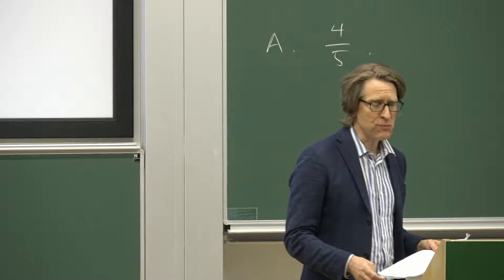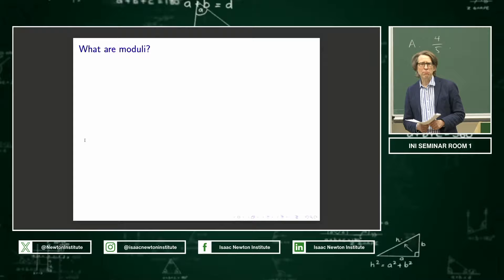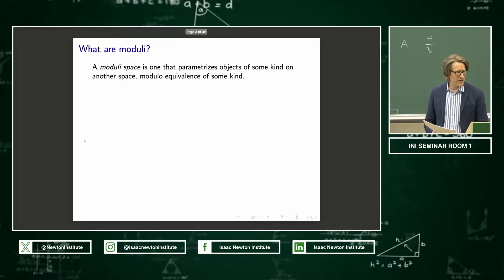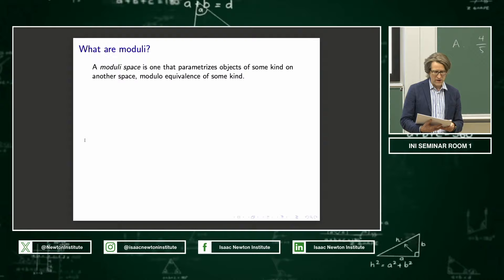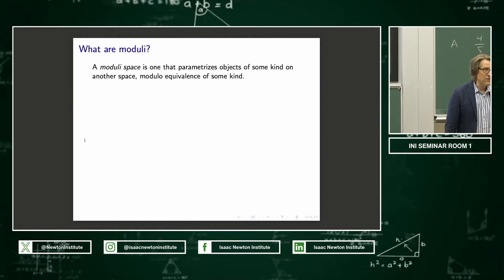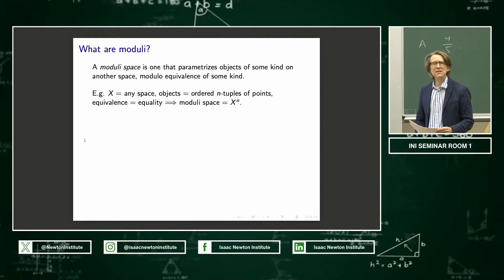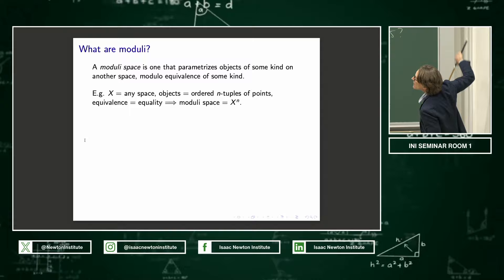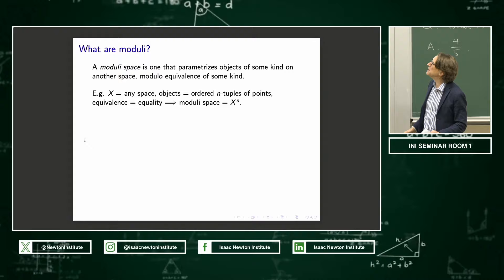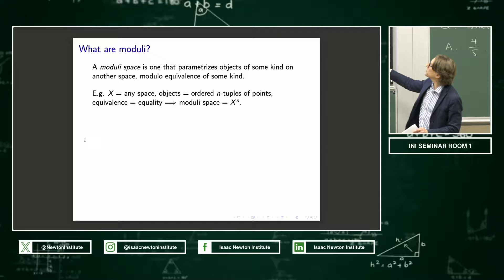I see a lot of algebraic geometry as centering around the problem of moduli. Moduli is a funny word because it's a plural word, but it's usually used to describe a single thing, a moduli space. What is a moduli space? It's simply one that parametrizes objects of some kind on another space, modulo some kind of equivalence. The most trivial example is that if X is any space at all, and if the objects I want to consider are ordered n-tuples of points, then the space parametrizing ordered n-tuples of points is simply the n-th Cartesian power, X^n.